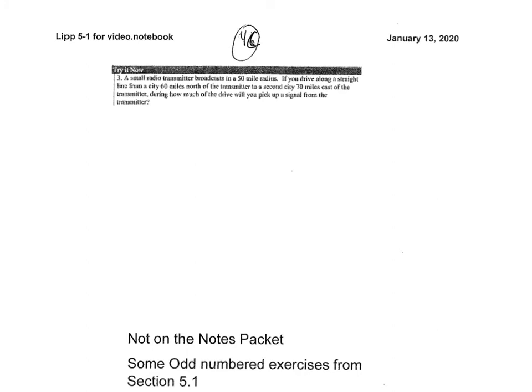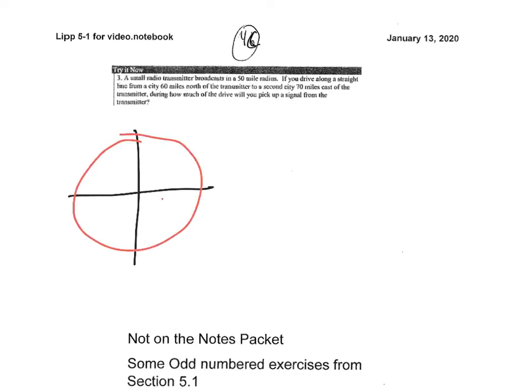I have a radio transmitter problem — this one tends to give people trouble. A radio transmitter broadcasts with a 50-mile radius, so the equation of that circle is x² + y² = 50² = 2500, centered at the origin.